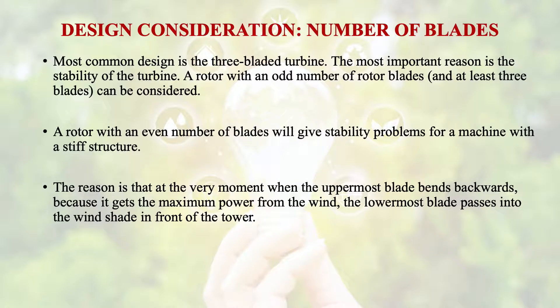The reason for using an odd number of blades is that at the very moment when the uppermost blade bends backward — because it gets the maximum thrust or power from the wind — the lowermost blade passes into the wind shed in front of the tower. So this is why we go for the odd number of blades.